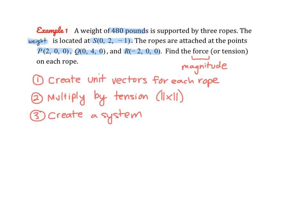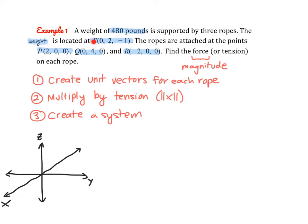Let's start with a quick sketch. Here is the x, y, and z axes. The weight is located at point S: (0, 2, -1), essentially down here. One rope goes from the weight to anchor point P at (2, 0, 0), acting in that direction from the weight outward.